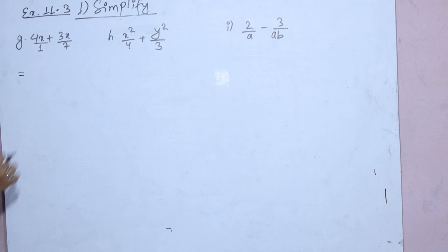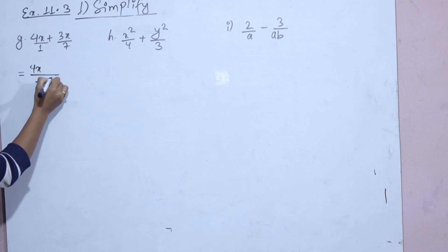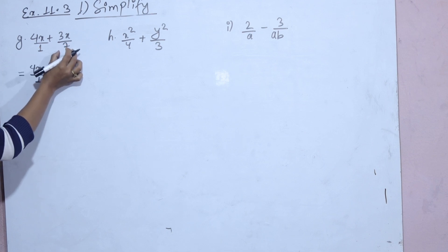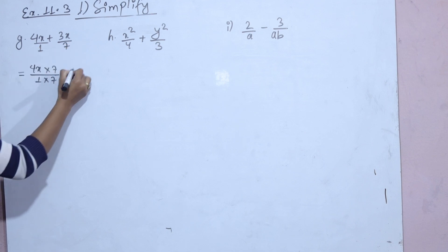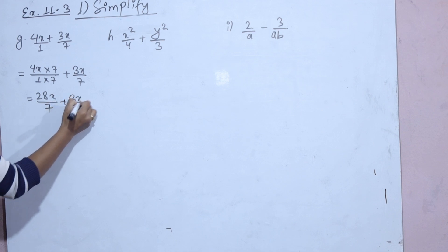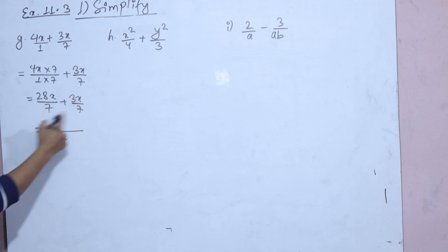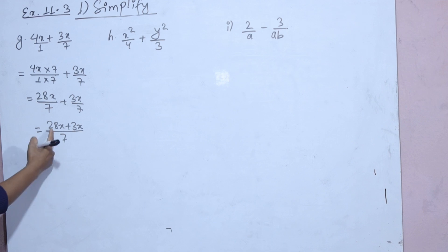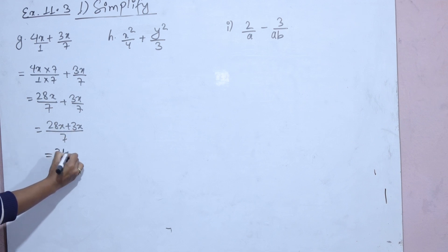Next sub-question: the LCM of 1 and 7 is 7. One into seven is seven, so the denominator becomes seven — same, same. The result is 28x plus 3x, and since the variable is the same, we add to get 31x by 7.